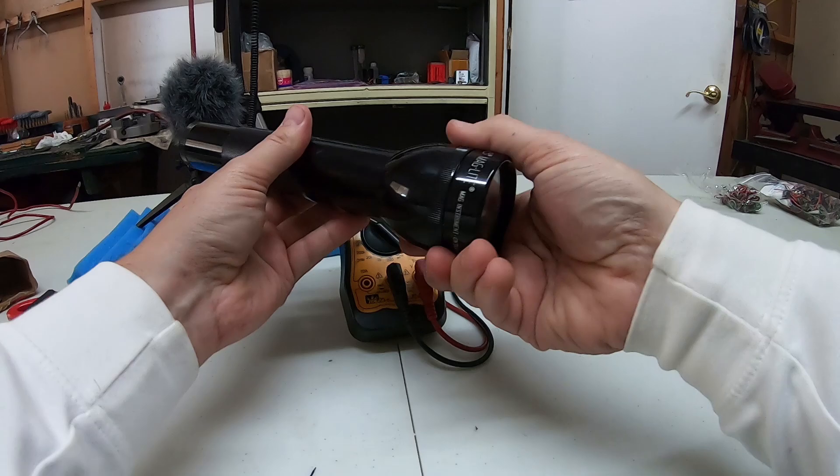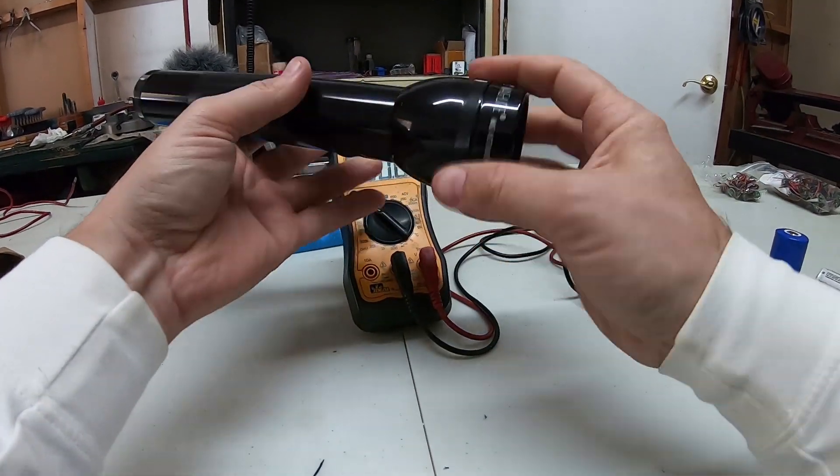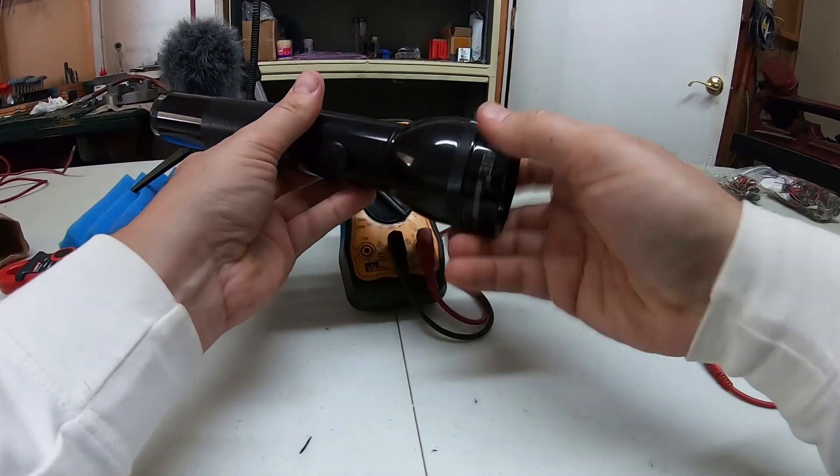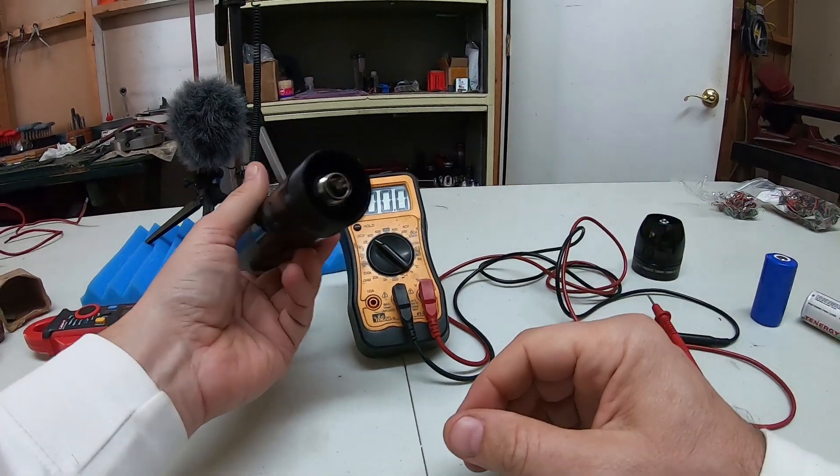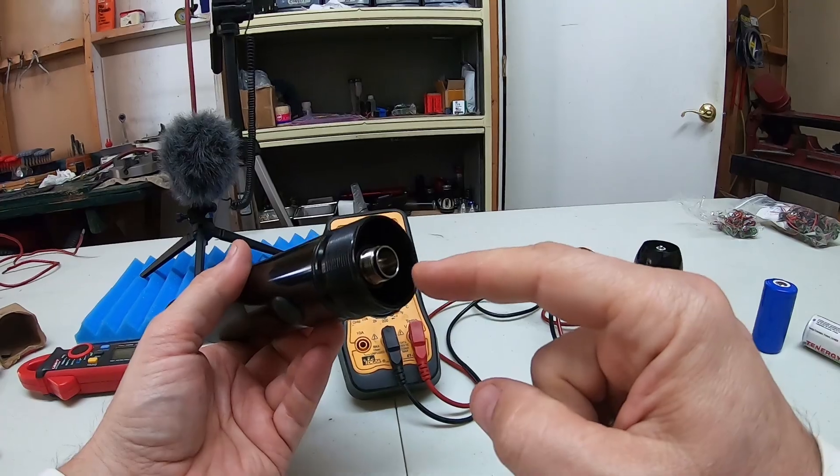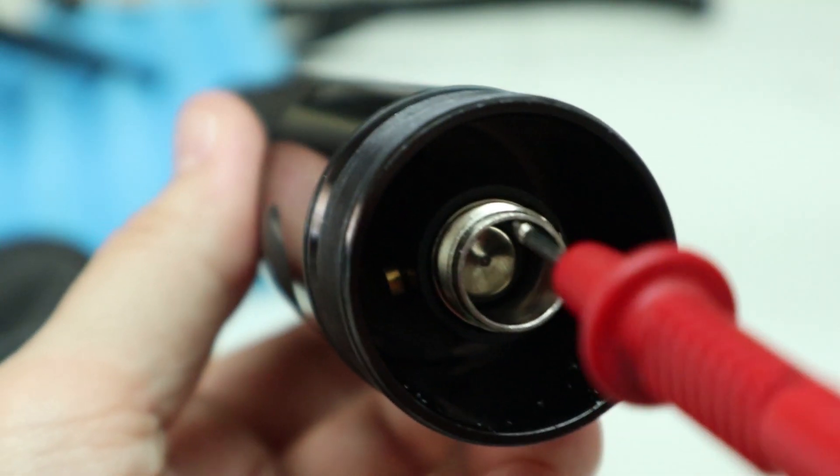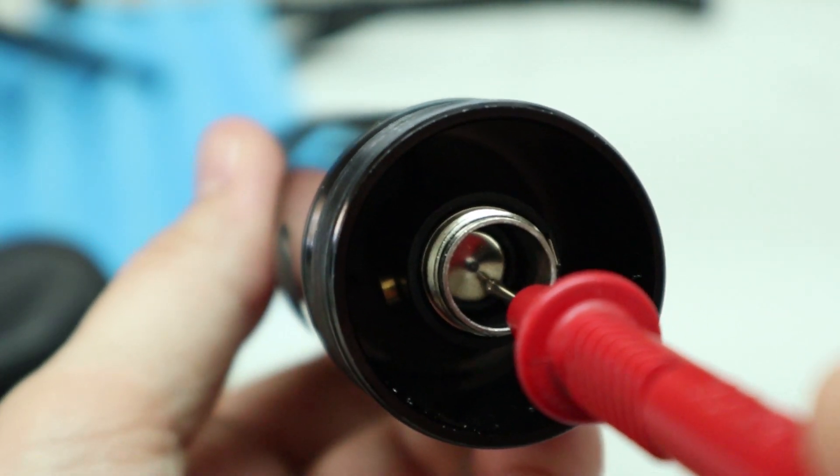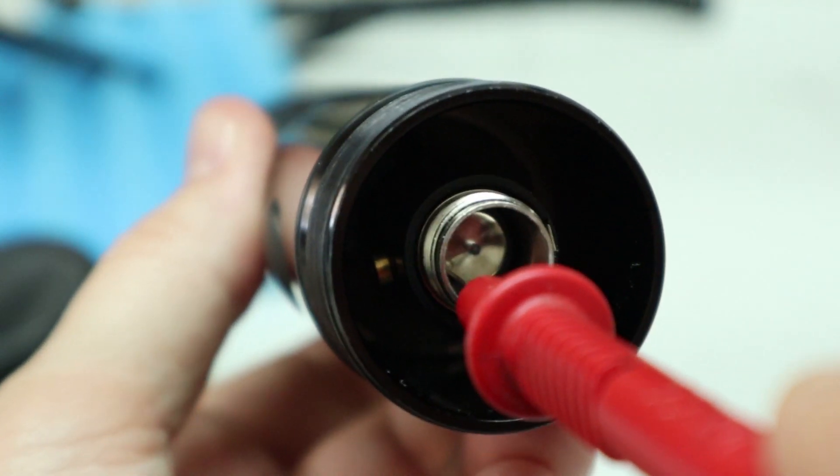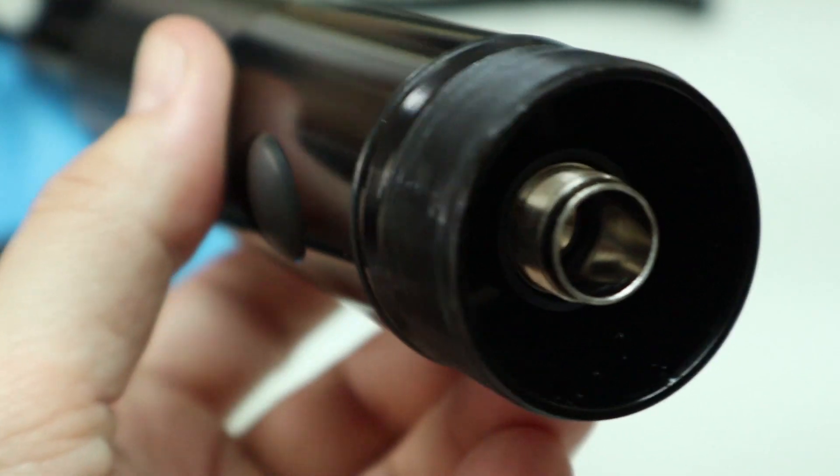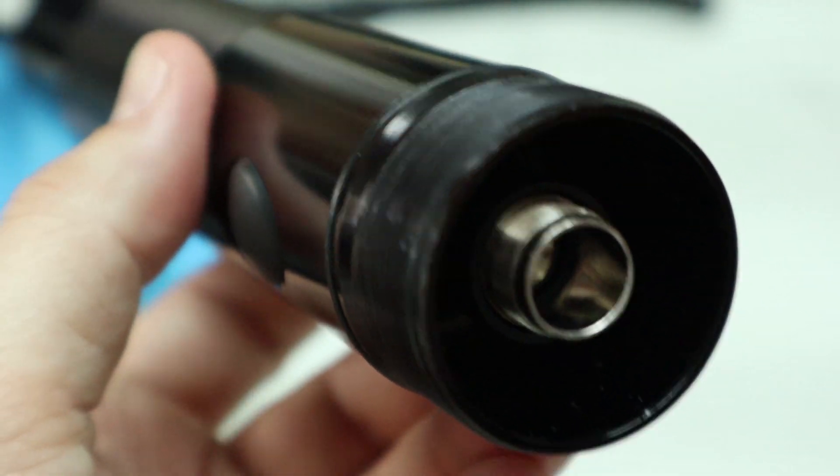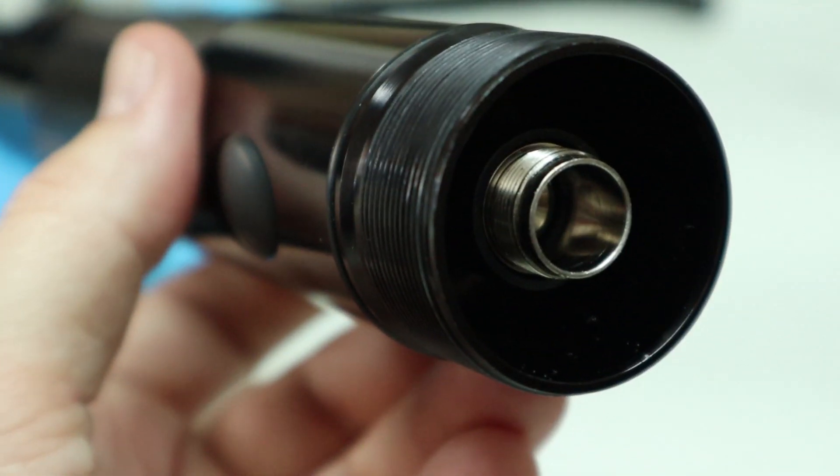Maybe the bulb is no good. How do we know? Well, take this head off and right here are both of our electrical contacts. In the center is positive and then this whole outside ring where the bulb holder used to thread on is our negative.